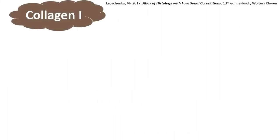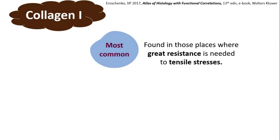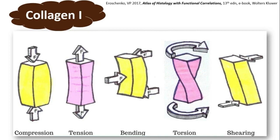Let's start with Collagen 1. They are the most common connective tissue fibers — most common among collagen fibers specifically. They are found in places where great resistance is needed to tensile stresses, which include compression (pushing force from both ends), tension (pulling force on both ends), bending, torsion, and shearing.